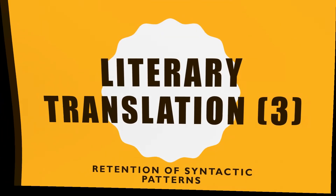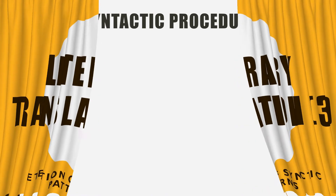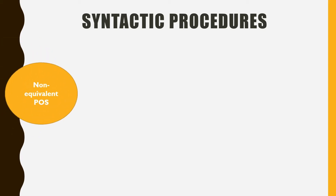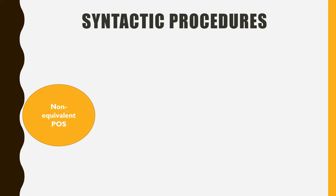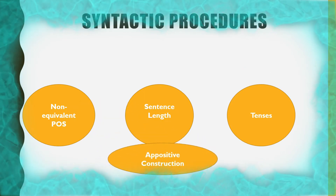Literary translation part 3: retention of syntactic patterns. In literary works, as we said last time, authors may make the language deviate from normal language use and some grammatical structures may appear deviated. Today we will consider some grammatical strategies that translators use in solving the problems of syntactic non-equivalence: sentence length, tenses, and appositive constructions.